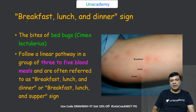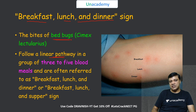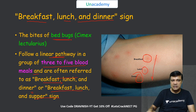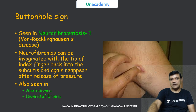The breakfast, lunch and dinner sign is seen due to bites of bedbugs. It follows a linear pathway in a group of 3 to 5 blood meals, representing the three blood meals — breakfast, lunch and dinner — of the bedbug in a line. It is also referred to as the breakfast, lunch and supper sign.